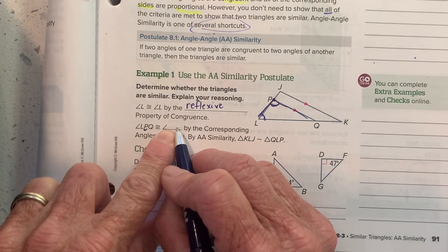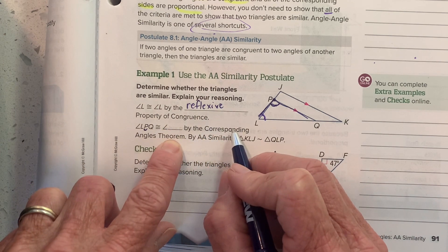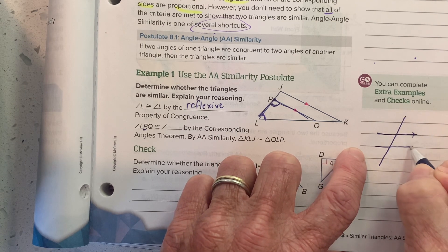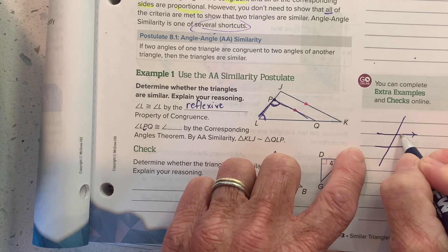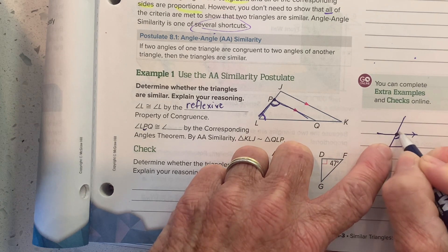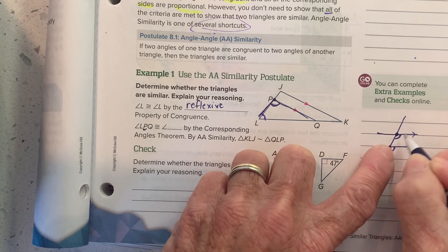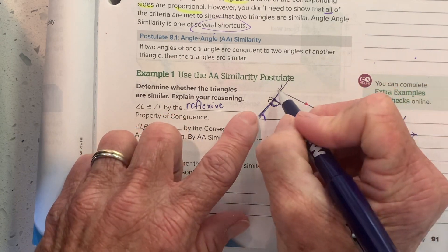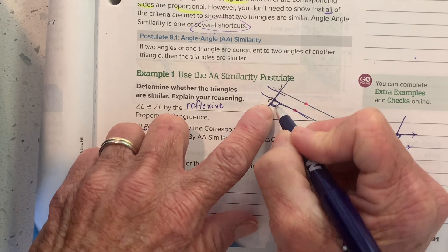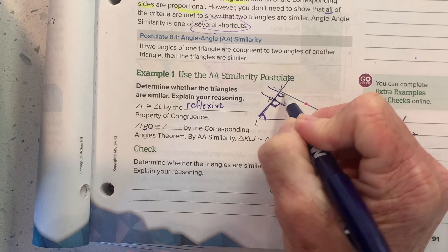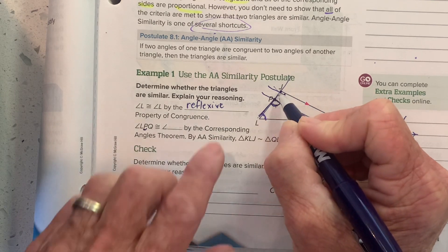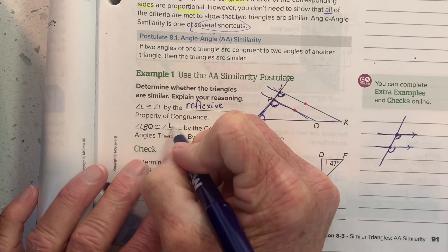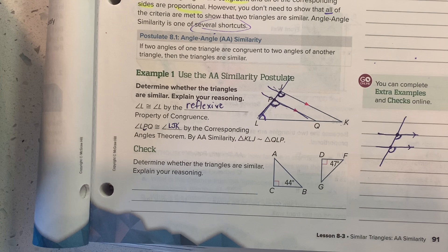We know that angle LPQ is congruent to another angle in this picture because of the corresponding angles theorem. Corresponding angles are two angles formed when a transversal crosses parallel lines — they're in the same position. This angle is in the lower-right position here, and so is that one. The angle in the same position has J as its vertex with L on one side and K on the other — angle LJK. So angle LPQ is congruent to angle LJK by the corresponding angles theorem.